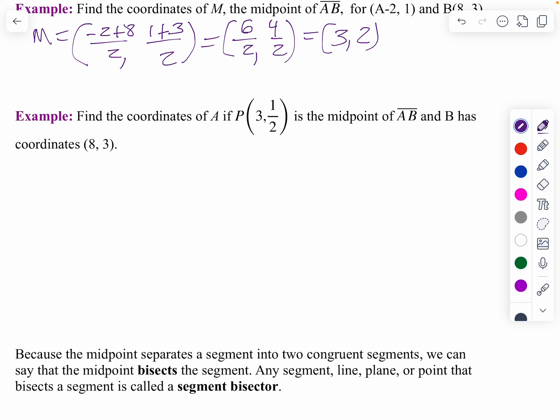That is, I know the midpoint. In this case, P is at 3 and 1 half. And I know one endpoint, but I want to find the other. Well, I like to do it geometrically. So what I'm going to do here is I'm going to graph this out.